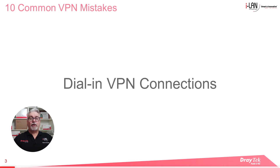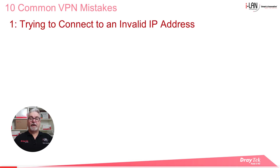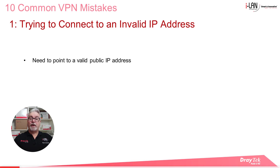Let's start by looking at some of the most common mistakes when setting up dial-in VPN connections. The first one we'll look at is trying to connect to an invalid IP address. When setting up your VPN client on your PC, you'll need to specify the destination IP address or domain name. This will need to point to a valid public IP address.